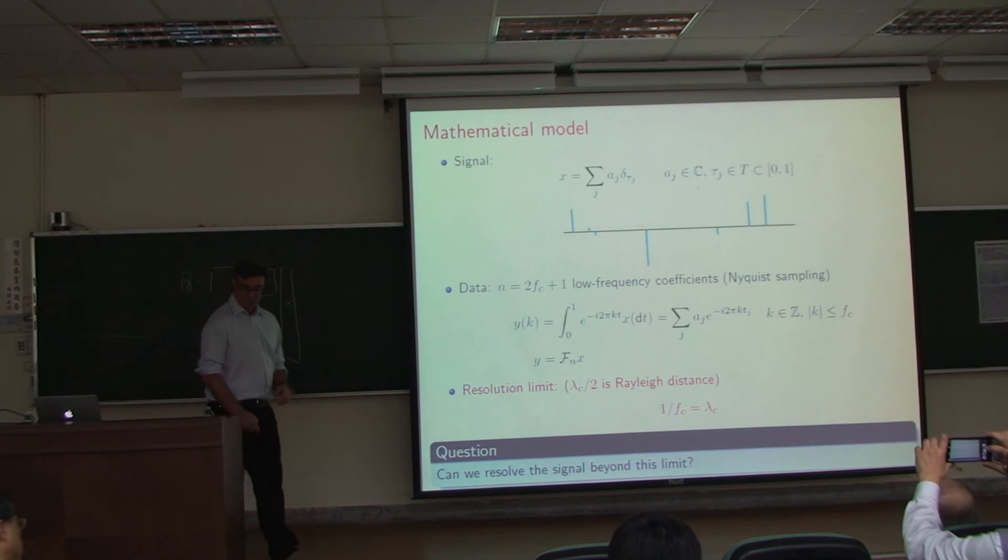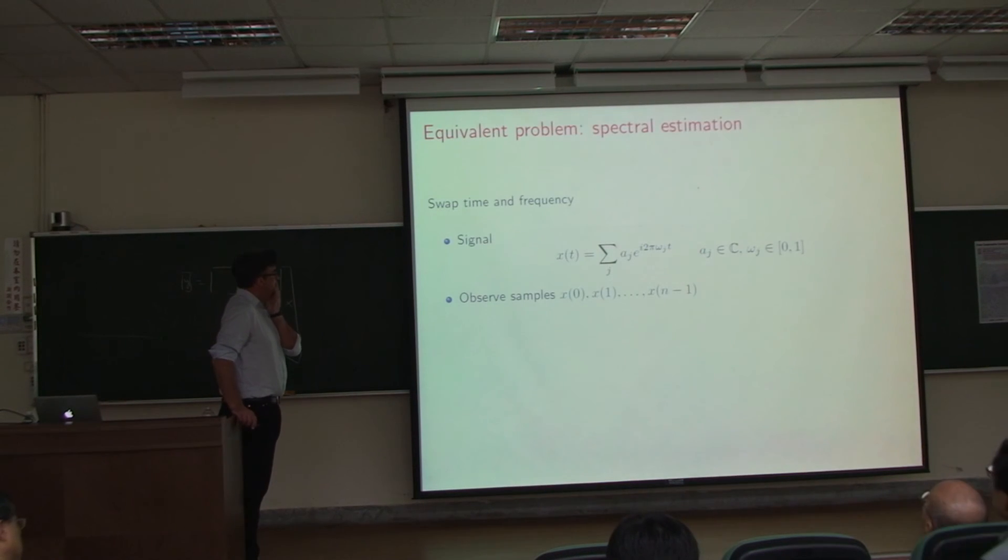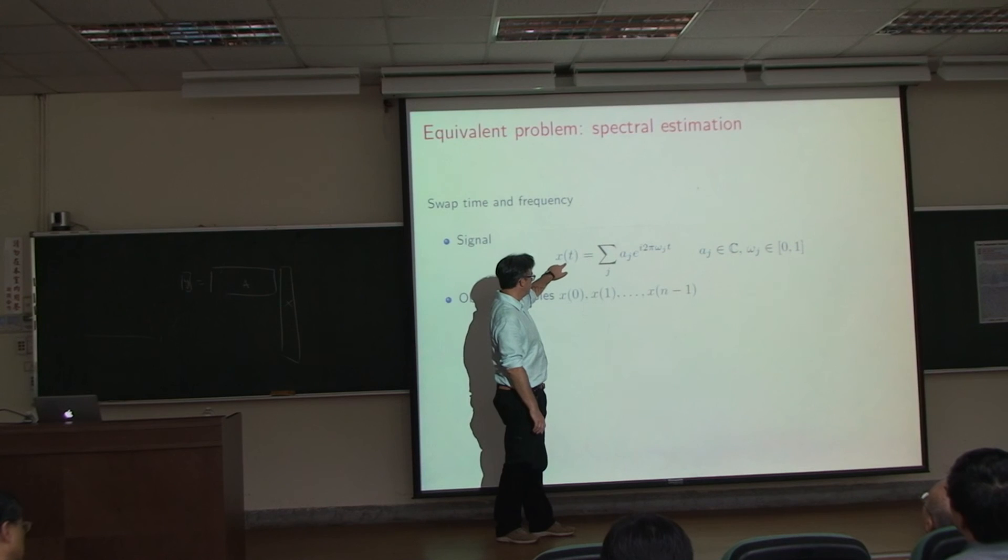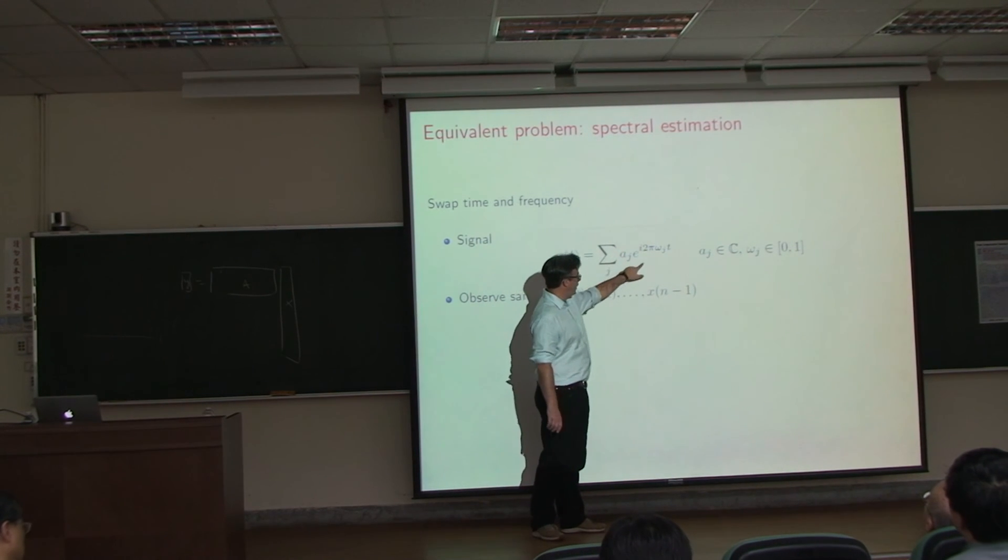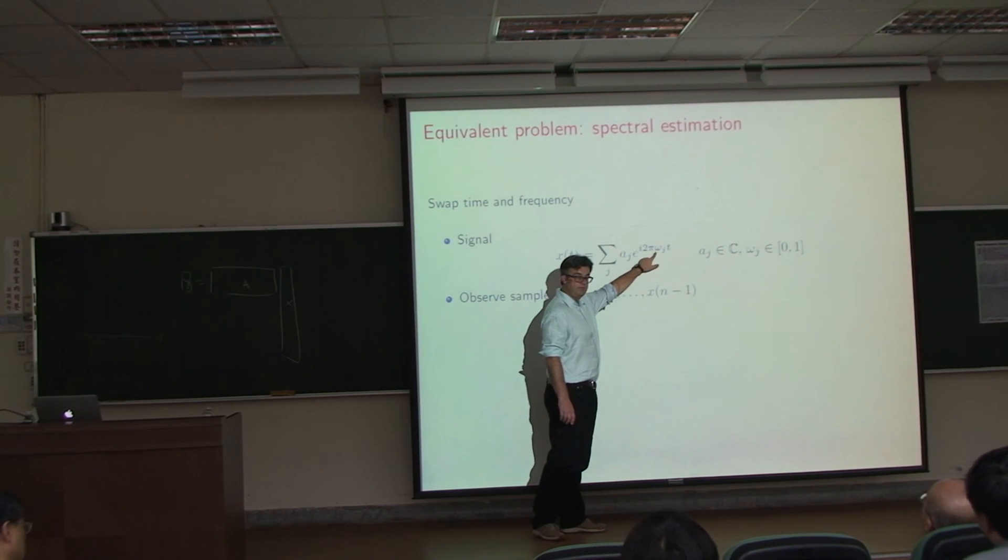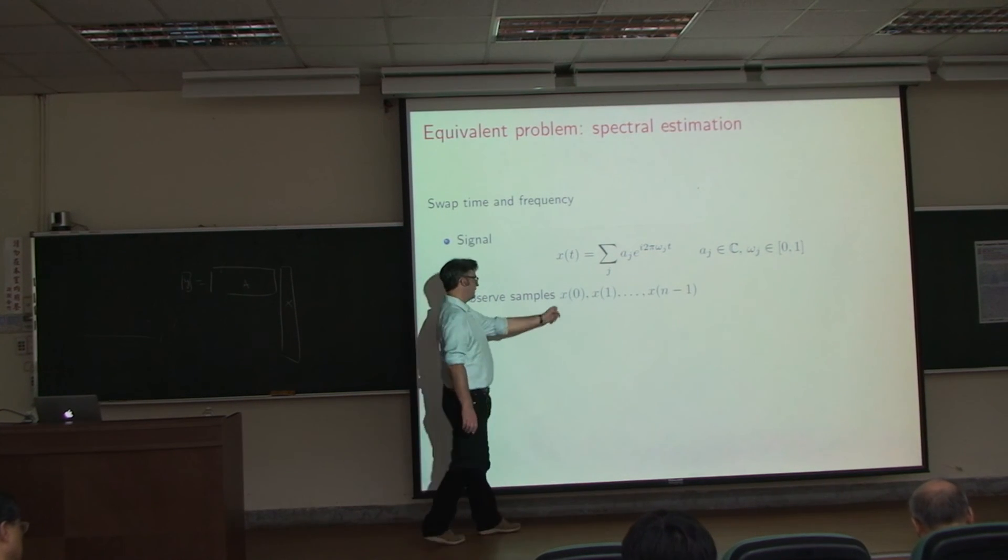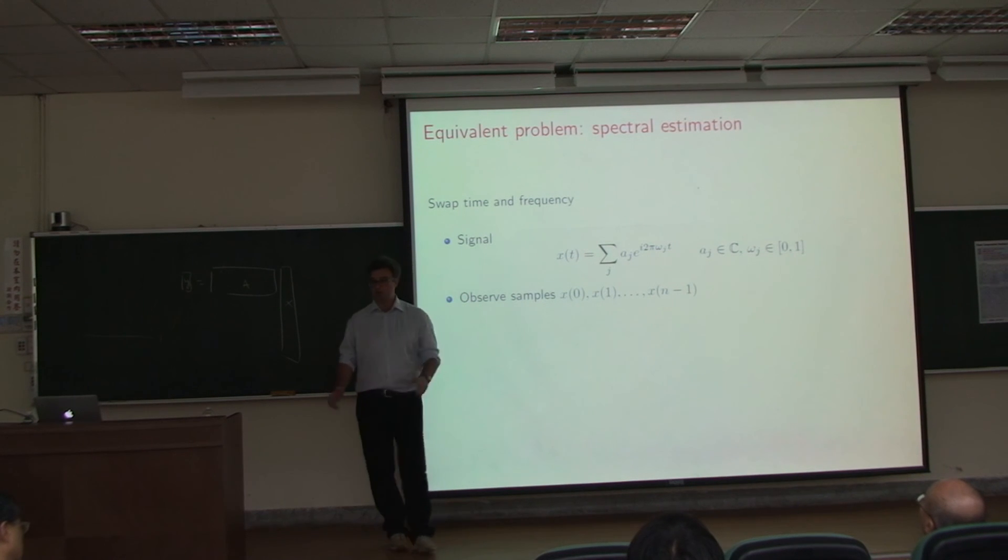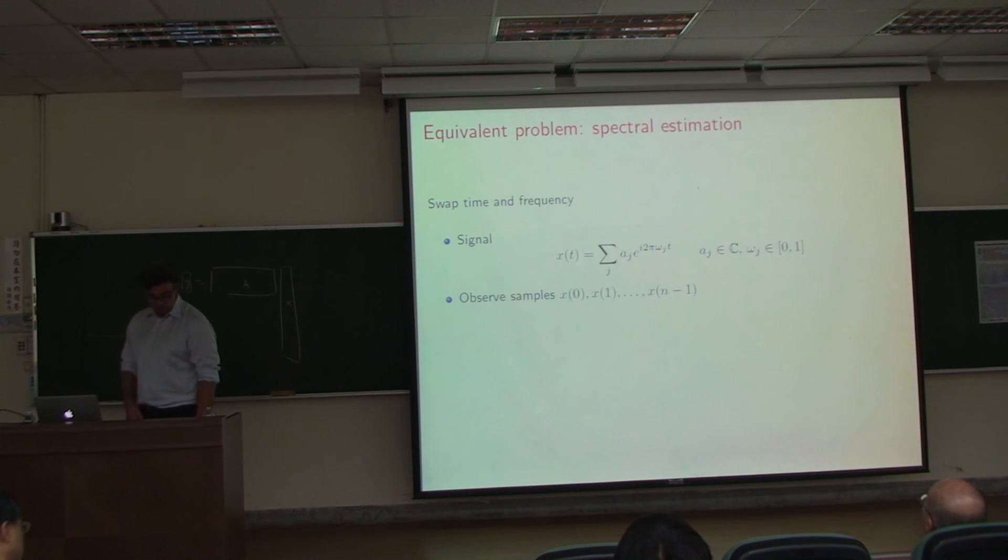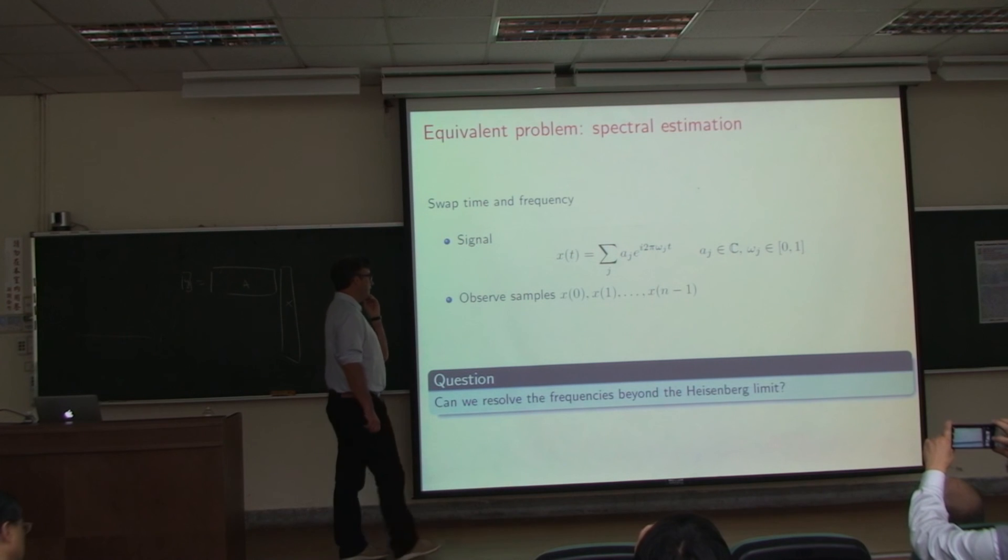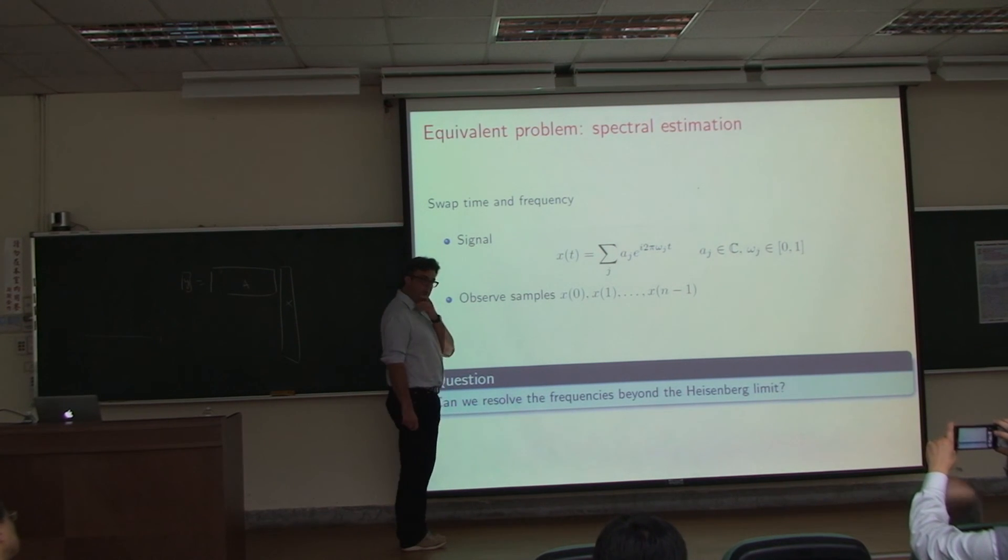Maybe some of you are interested in spectral estimation. It's exactly the same problem. In spectral estimation, I'm just going to swap time and frequency. I have a time signal as a function of time, which is a superposition of Fourier modes with unknown frequencies, and I would like to estimate them as accurately as possible from samples x_0, x_1, x_n minus 1. It's exactly the same problem by swapping time and frequency. If I swap time and frequency, I'm going to ask whether I can resolve the frequencies beyond the Heisenberg limit. It's exactly the same: if you can do one problem, you can do the other.